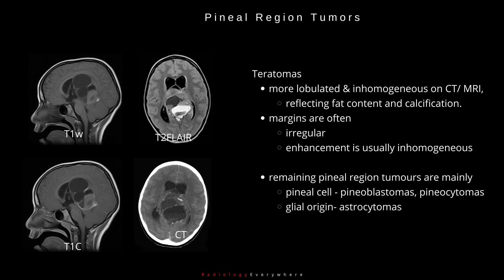Teratomas appear more lobulated and inhomogeneous on CT and MRI, reflecting fat content and calcification. The margins are often irregular, and enhancement is usually inhomogeneous.